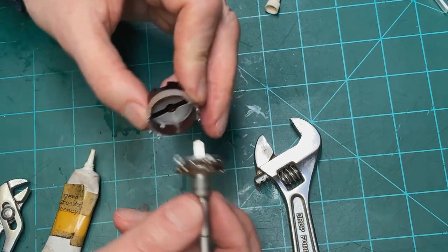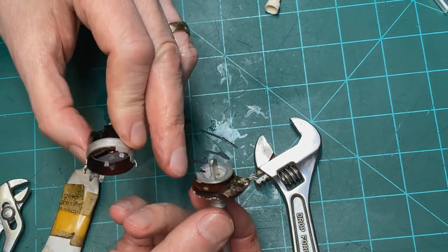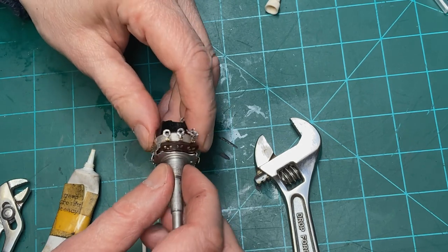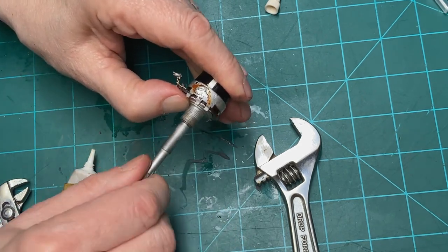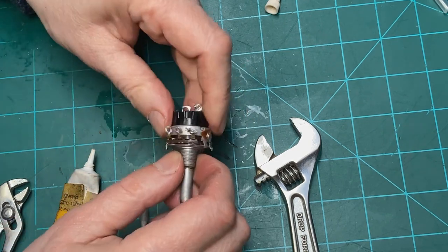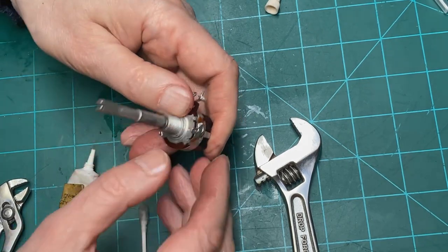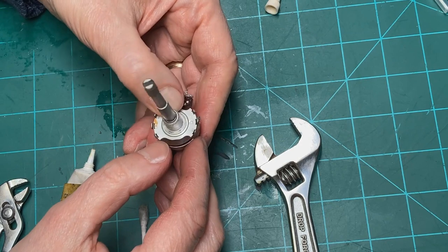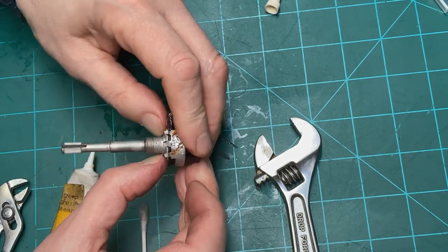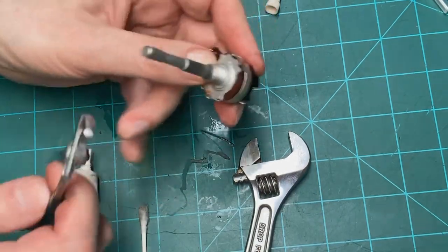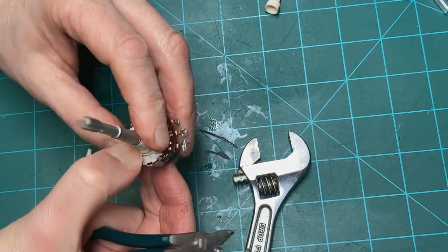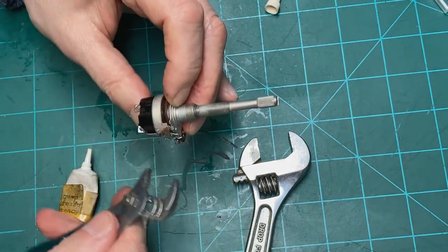See where that slot is in there? This has got to be in there just the right way so these stops will work properly. There we go. Had it 180 degrees out of phase there. Alright. Well, we've got that clamped together. I'm going to bend a couple of these tabs down just to make it good and tight. And we'll test this thing and see how it works.